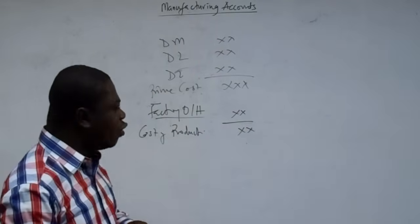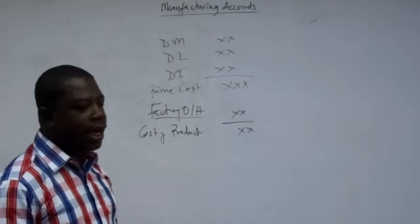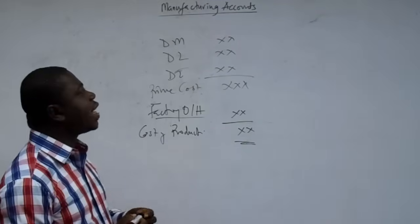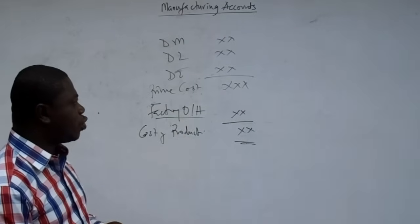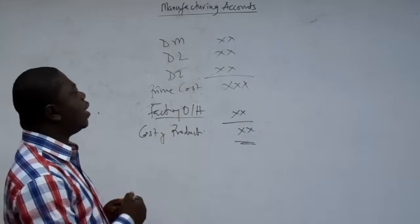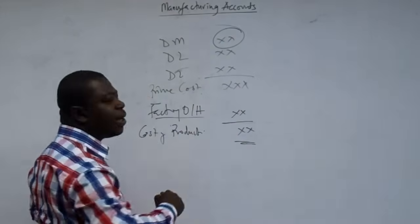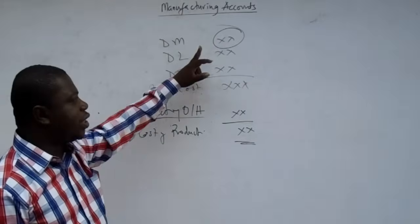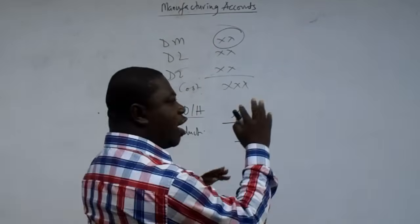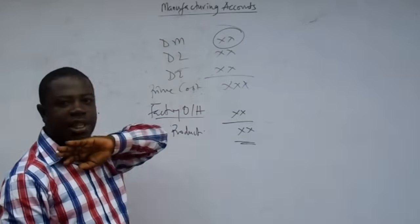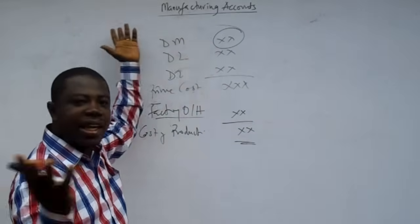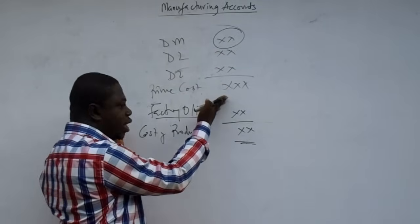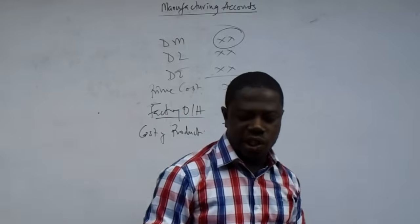We are not going to add the non-factory overheads — this is all we need for the manufacturing account. The main issue is how to get the direct material used in production, because the question will not give you the direct material figure directly. We will have some items and calculate our direct material cost. Once we have direct material, we add any direct labor and direct expenses to get prime cost, then add factory overheads to get our cost of production.